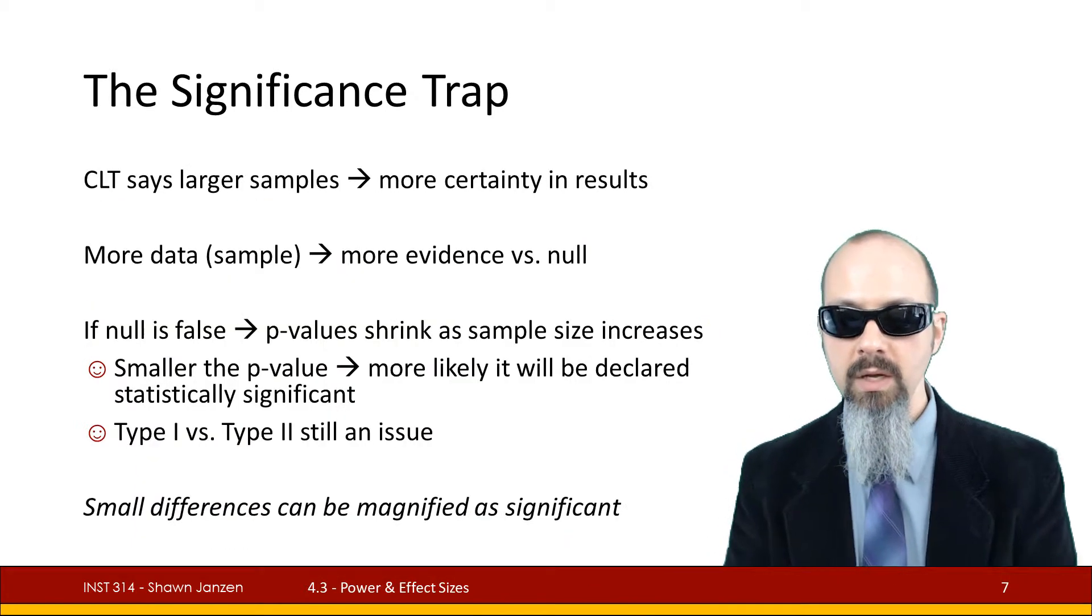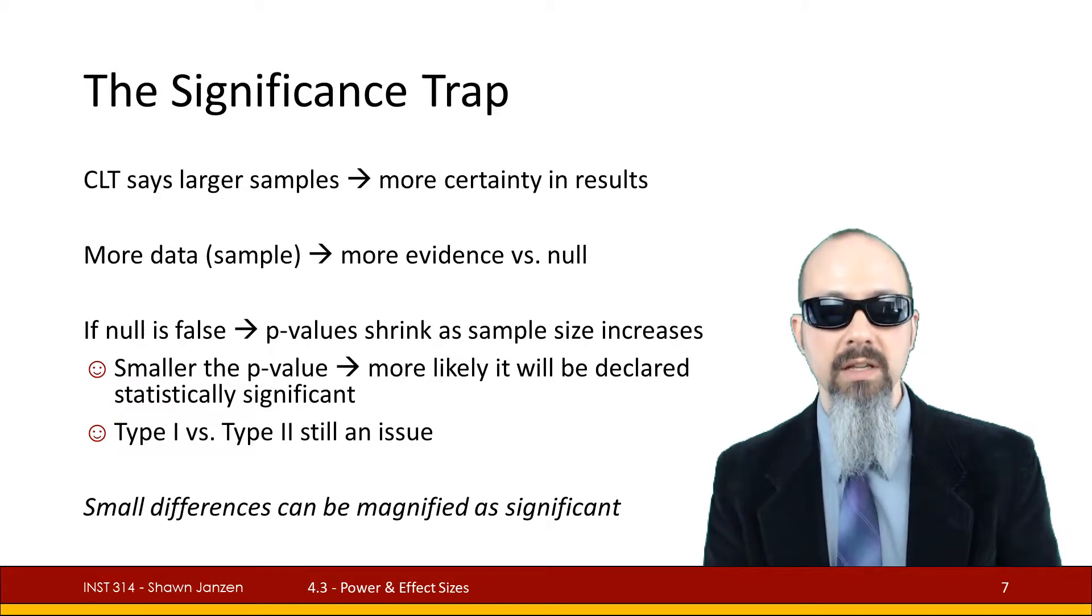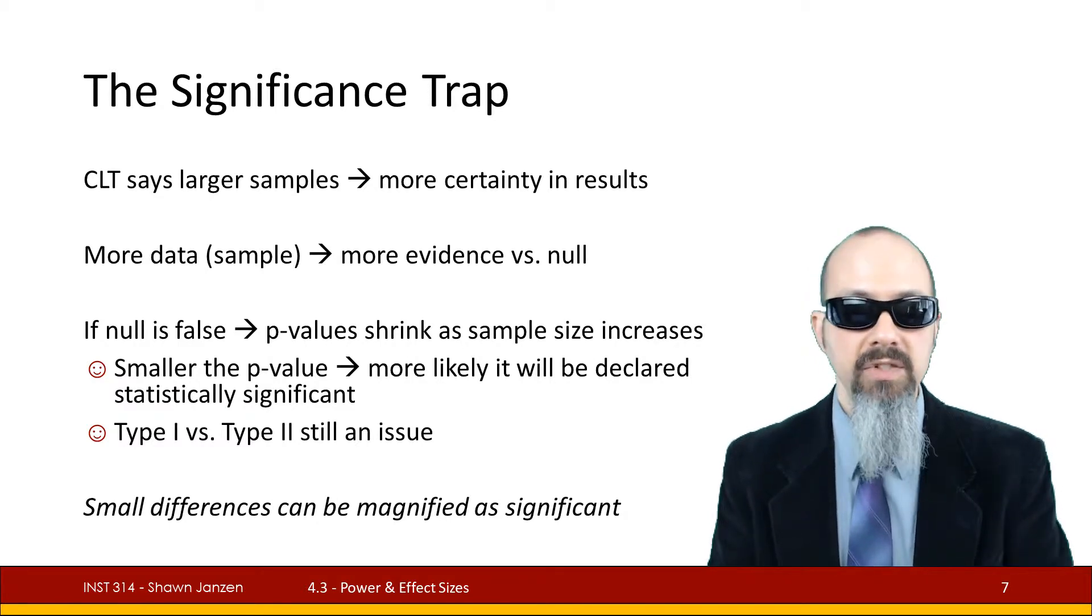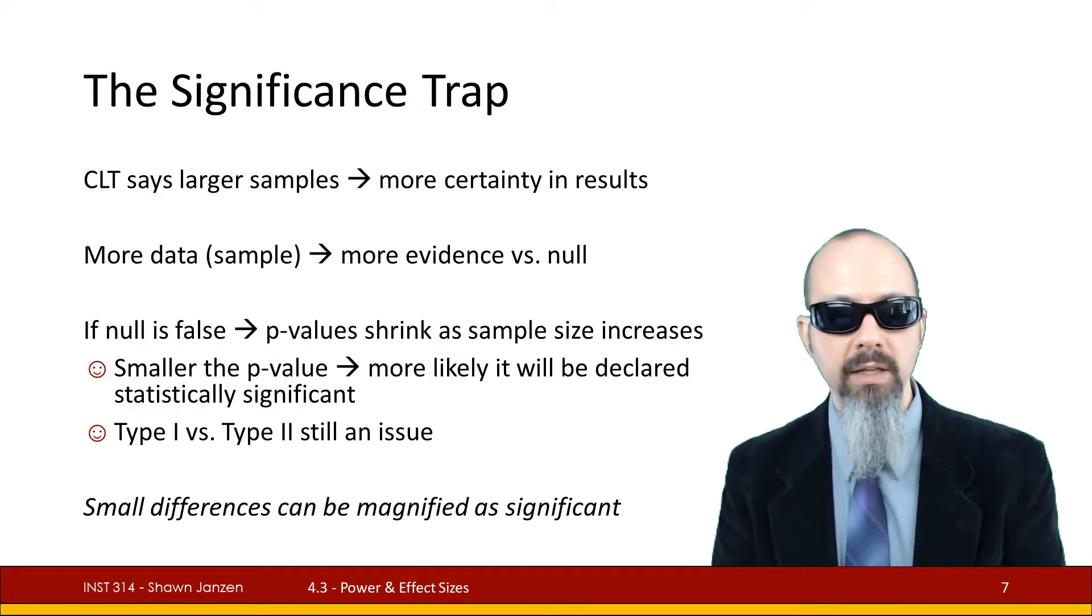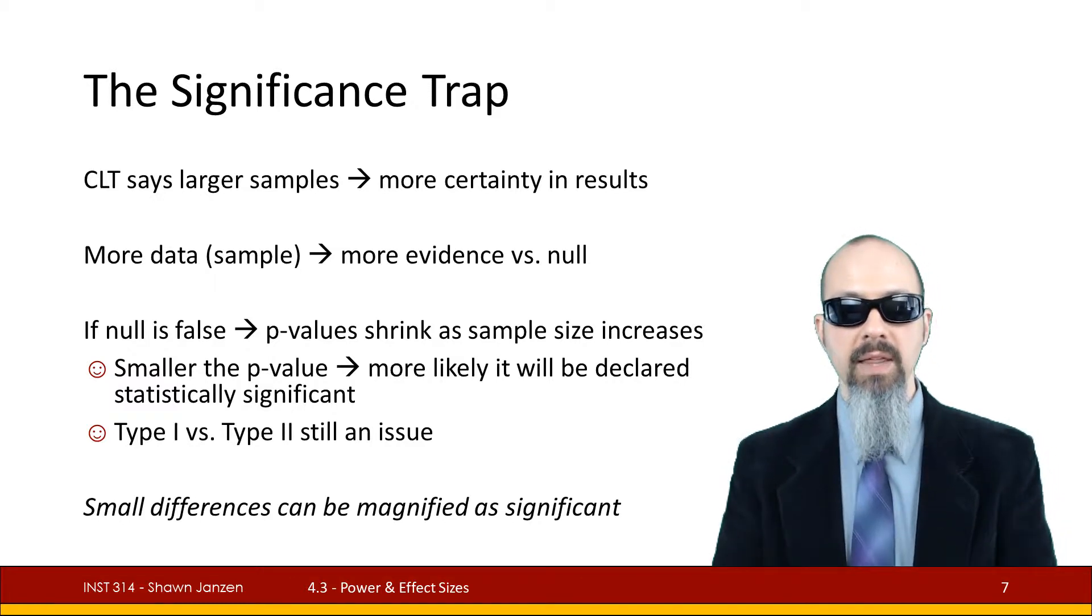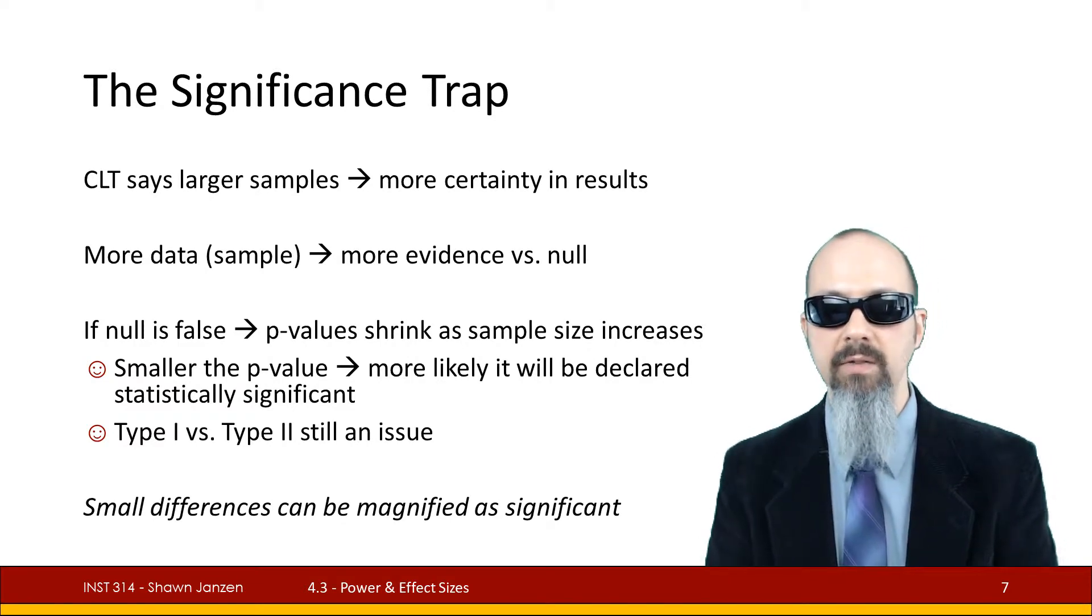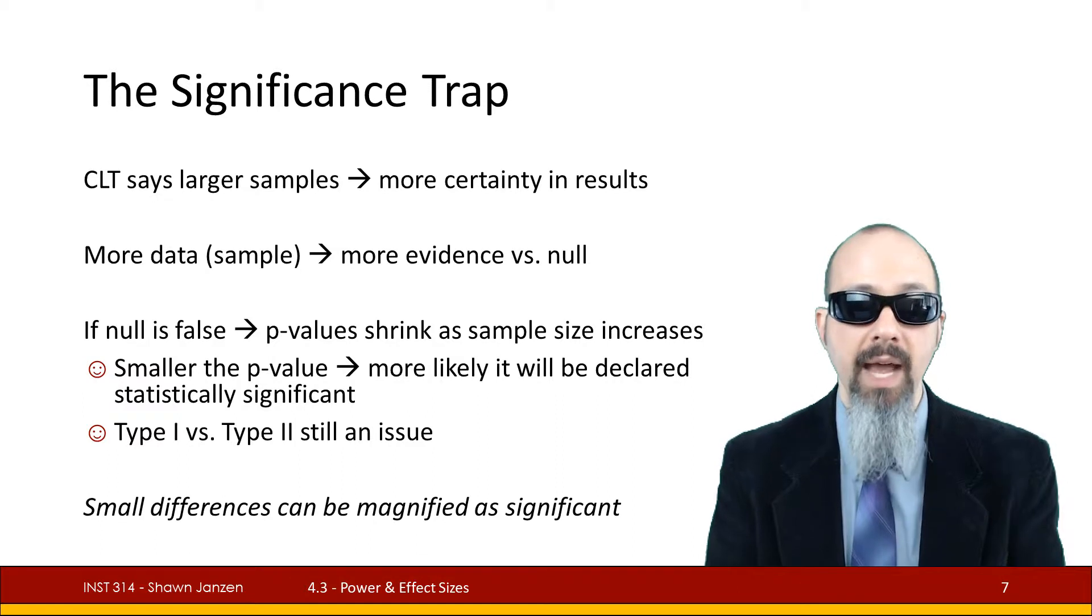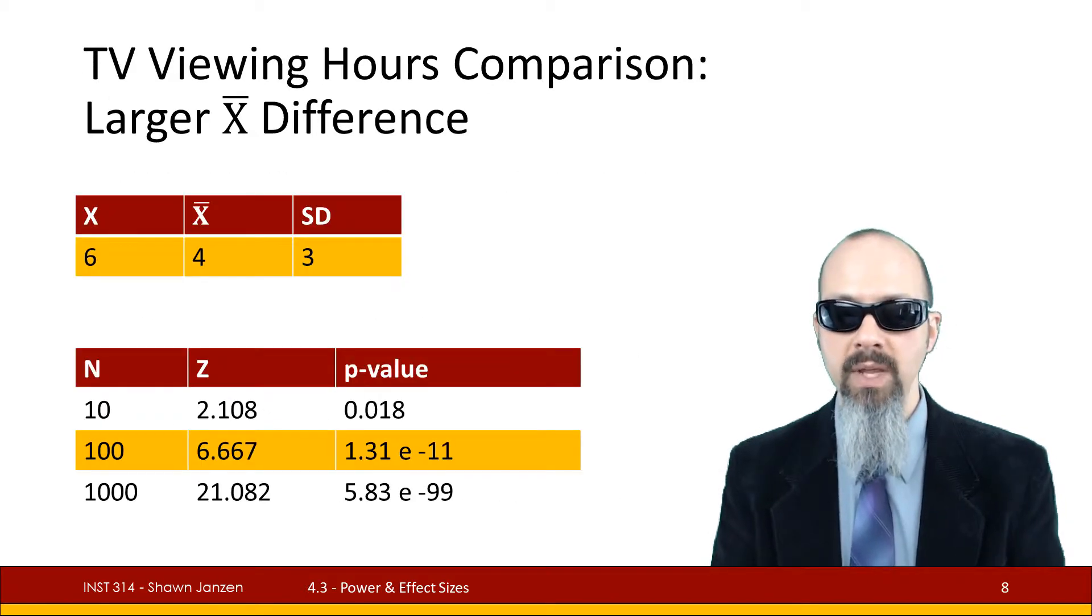Let's take the significance into a bit of a trap here. The central limit theorem says the bigger the sample, the more certain you get your results. The more data you have, the more evidence you're going to get to try and disprove the null. Your p-value is going to shrink as your sample size increases. Keep in mind that small differences can be magnified and marked as significant when your population gets higher and higher. That's what I mean by that significance trap.